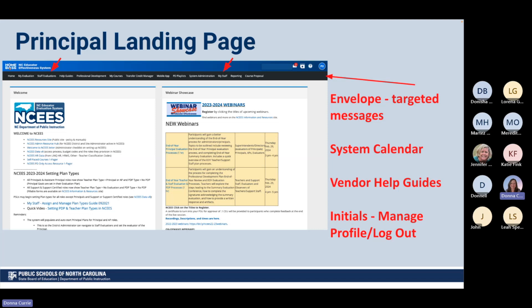You can also click on your initials and there's some information you can find there in the upper right-hand corner. If you've never clicked on your initials, click up there to look at what's found, and we'll demonstrate that when we're on the live site in just a second.